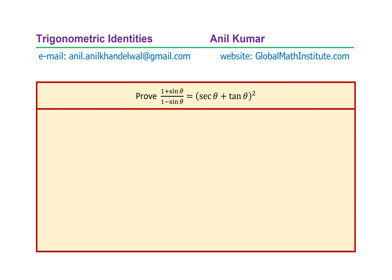We need to prove that 1 plus sine theta over 1 minus sine theta is equal to secant theta plus tan theta, whole square.